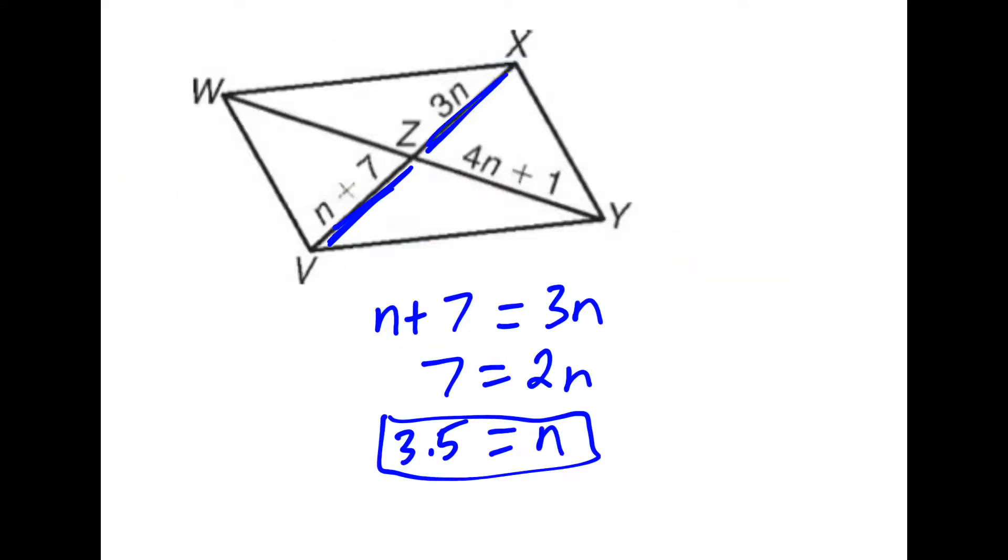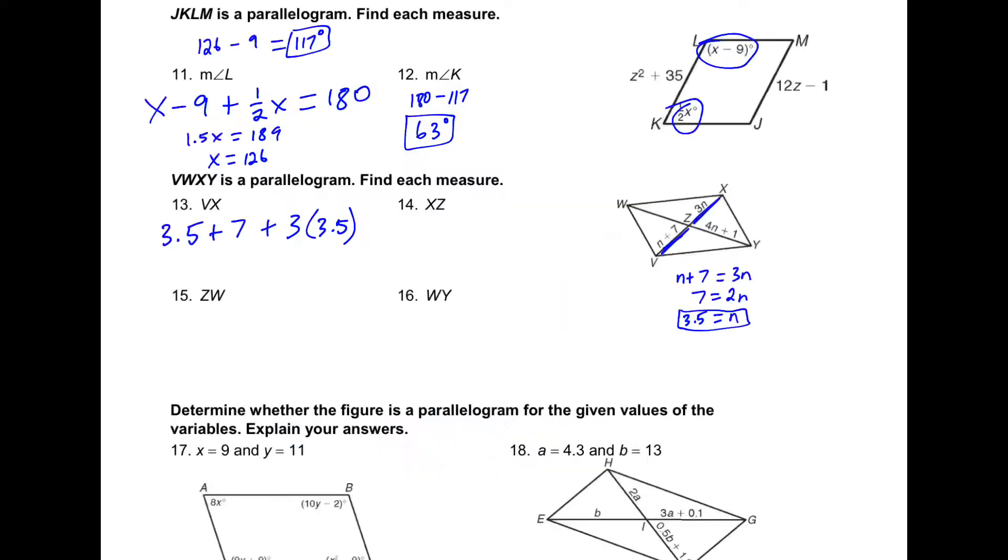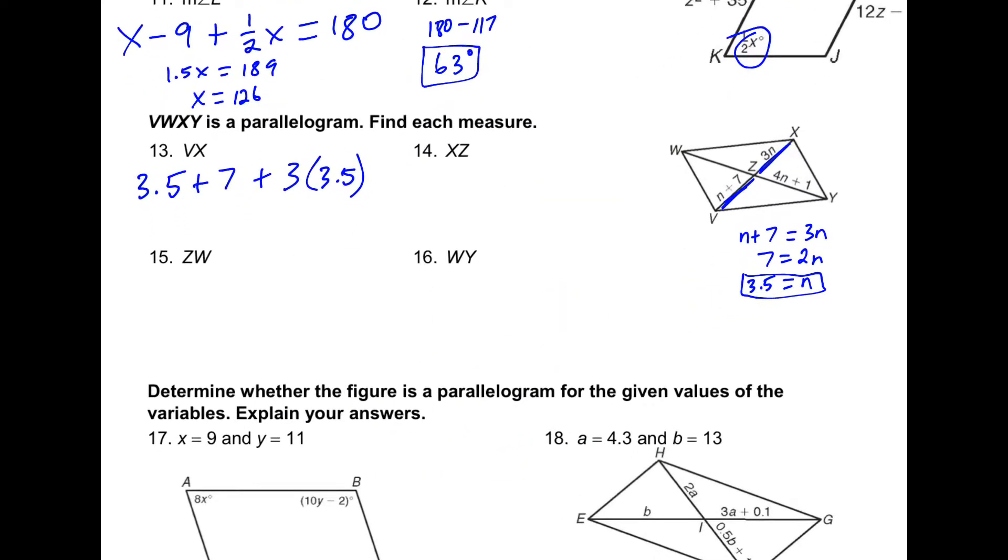The next four problems use this parallelogram. And because the diagonals bisect each other, n plus 7 is equal to 3n. And if we solve for this, we figure out that n is equal to 3.5, which we can use to plug in for n in these various locations. So for Vx, if we plug in 3.5 for n in each spot, the sum is 21.